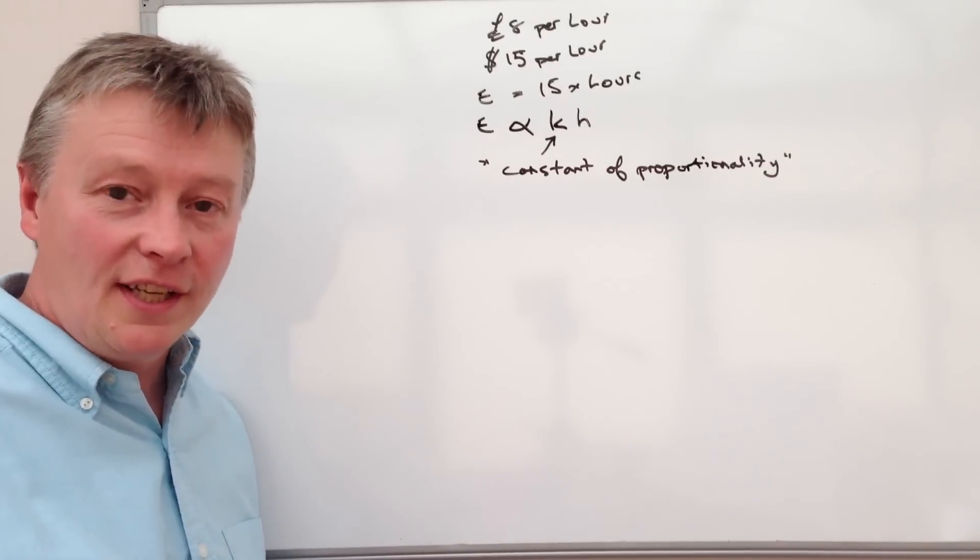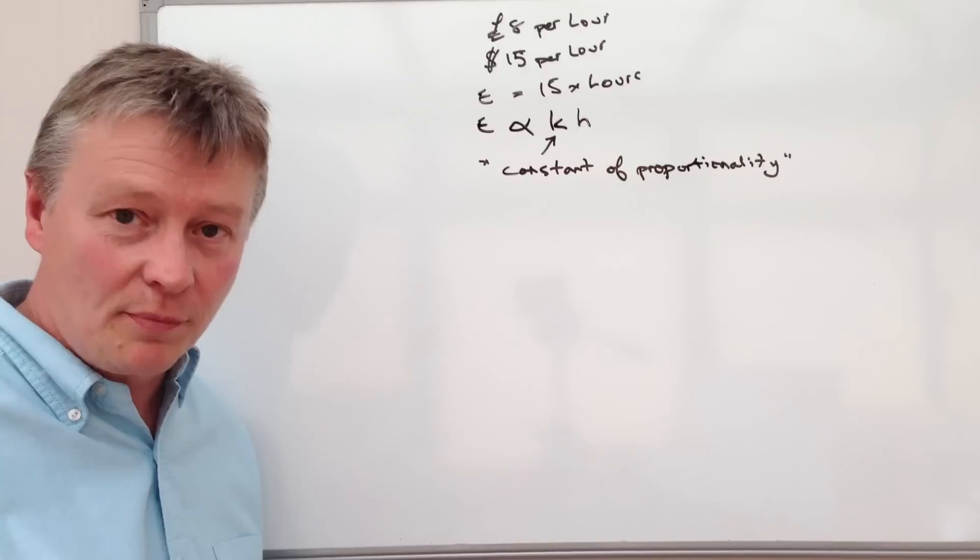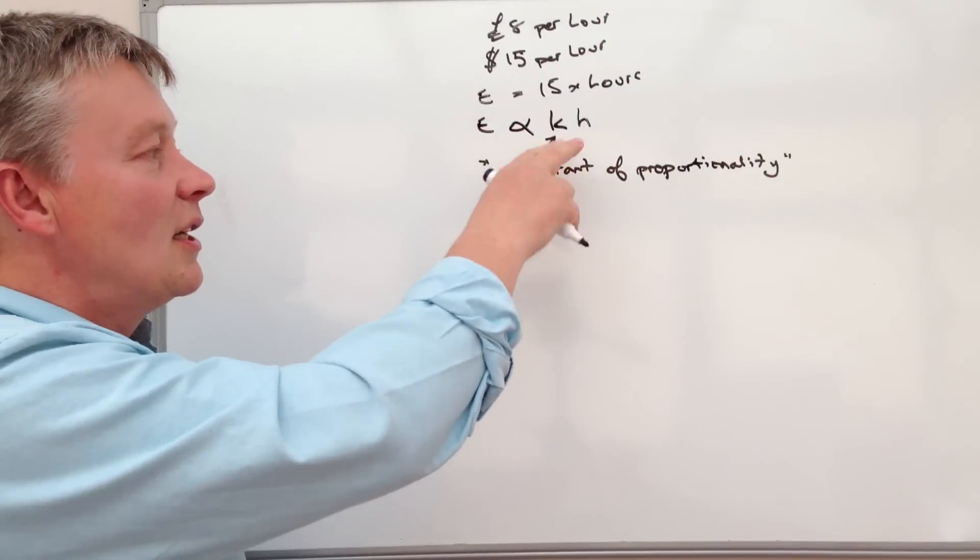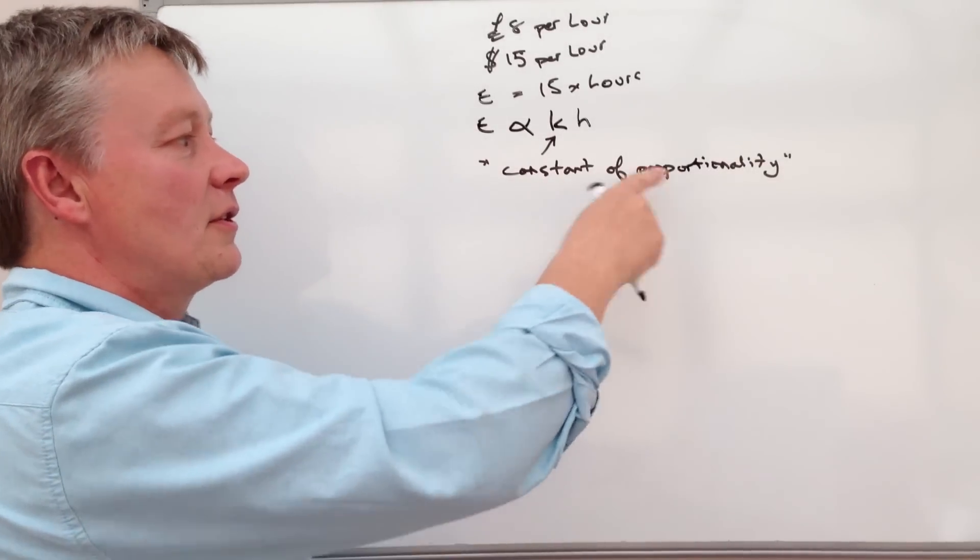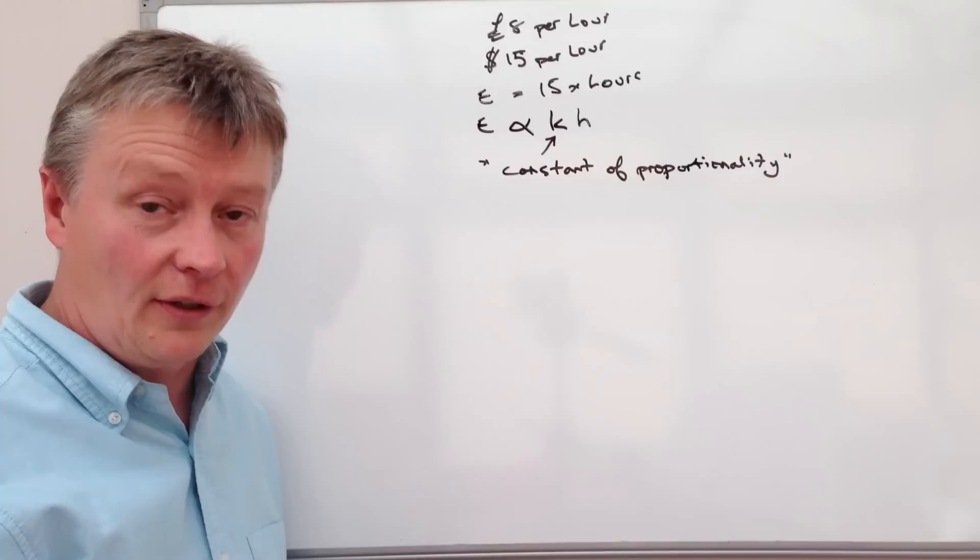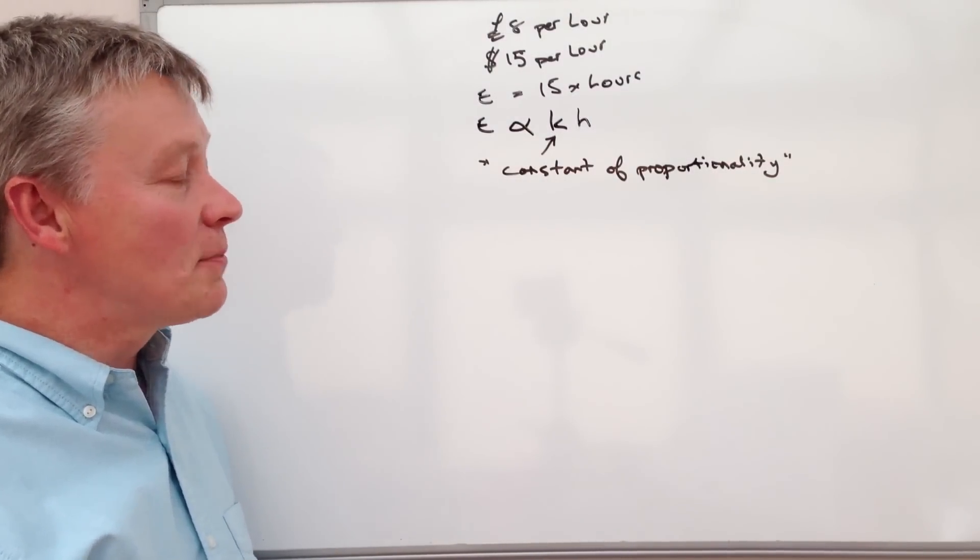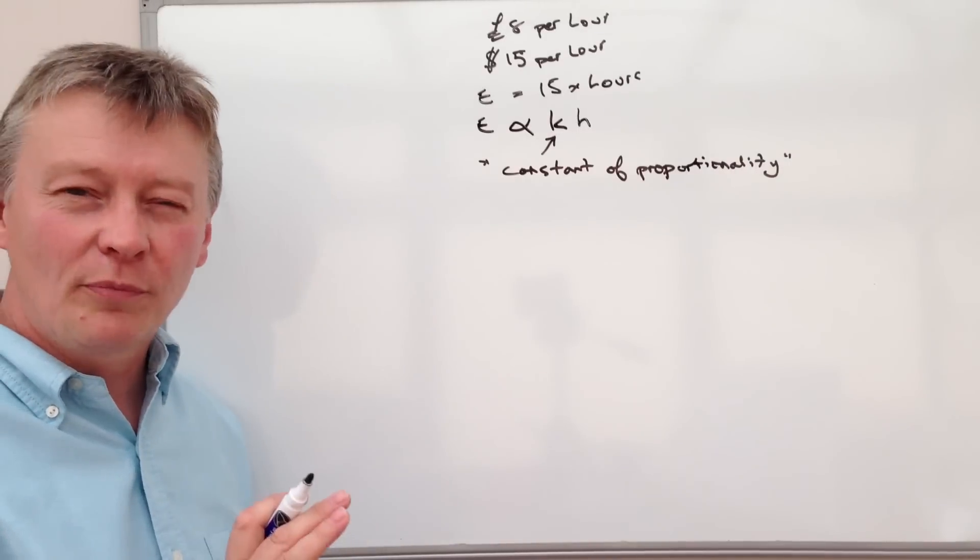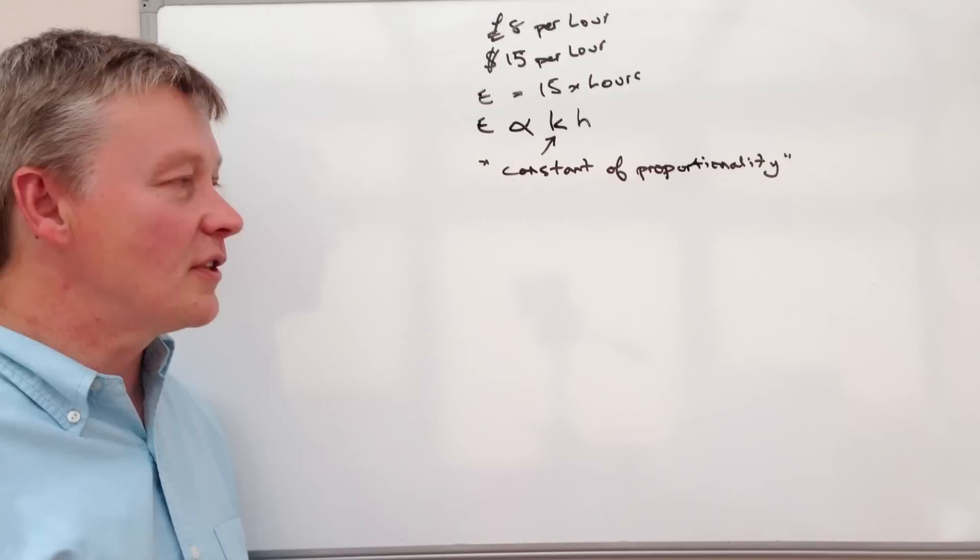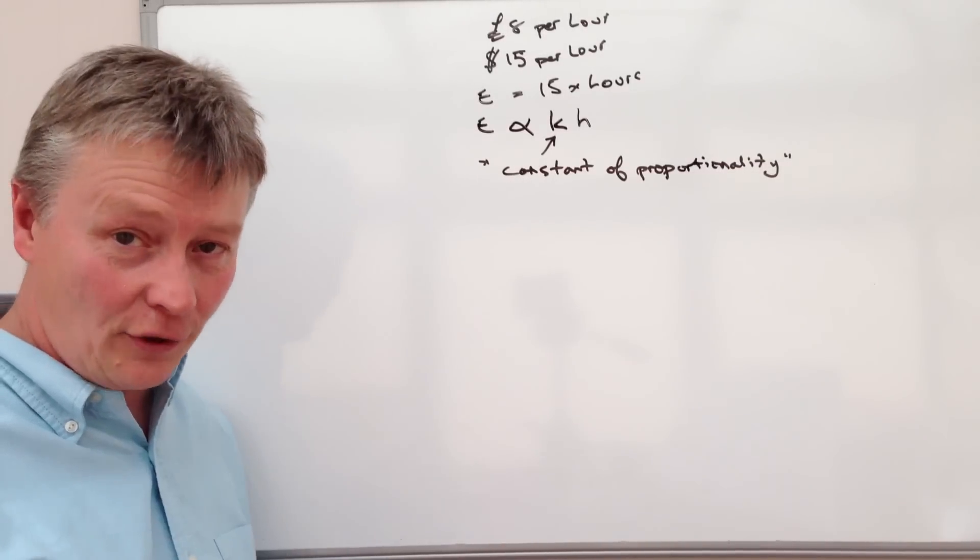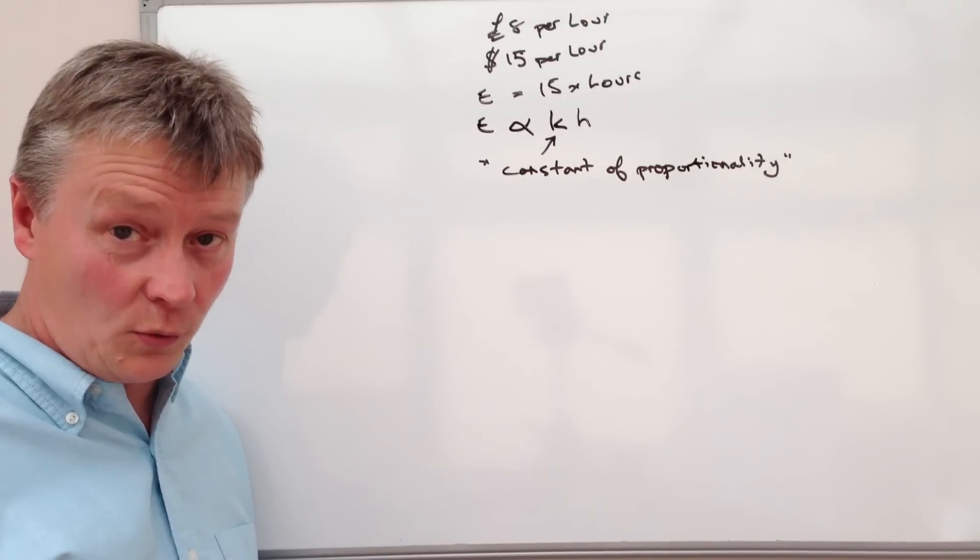So that's the general idea with direct proportion. An exam question, generally speaking, will use some kind of equation like that, ask you to work out the constant of proportionality and then use that constant to calculate something else. Generally speaking, these types of questions are worth probably about three or four marks. I'm just going to refer to my notes with this particular question, which is an A grade question. But it should give you some idea of how these particular questions work.